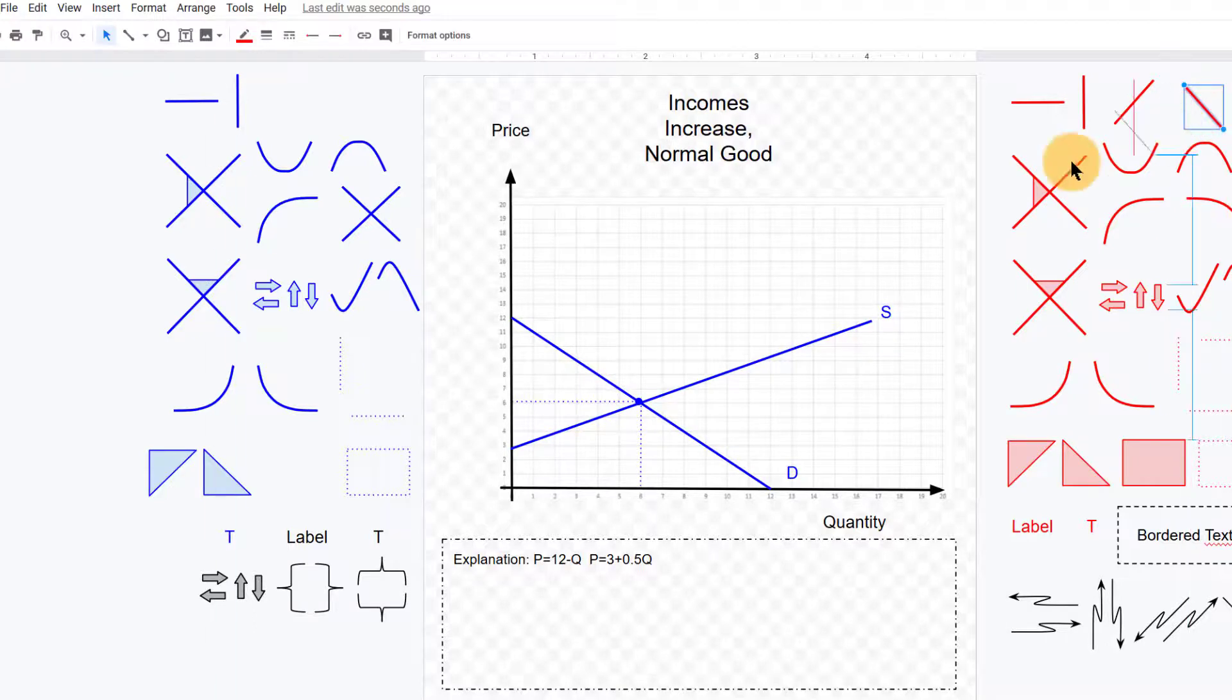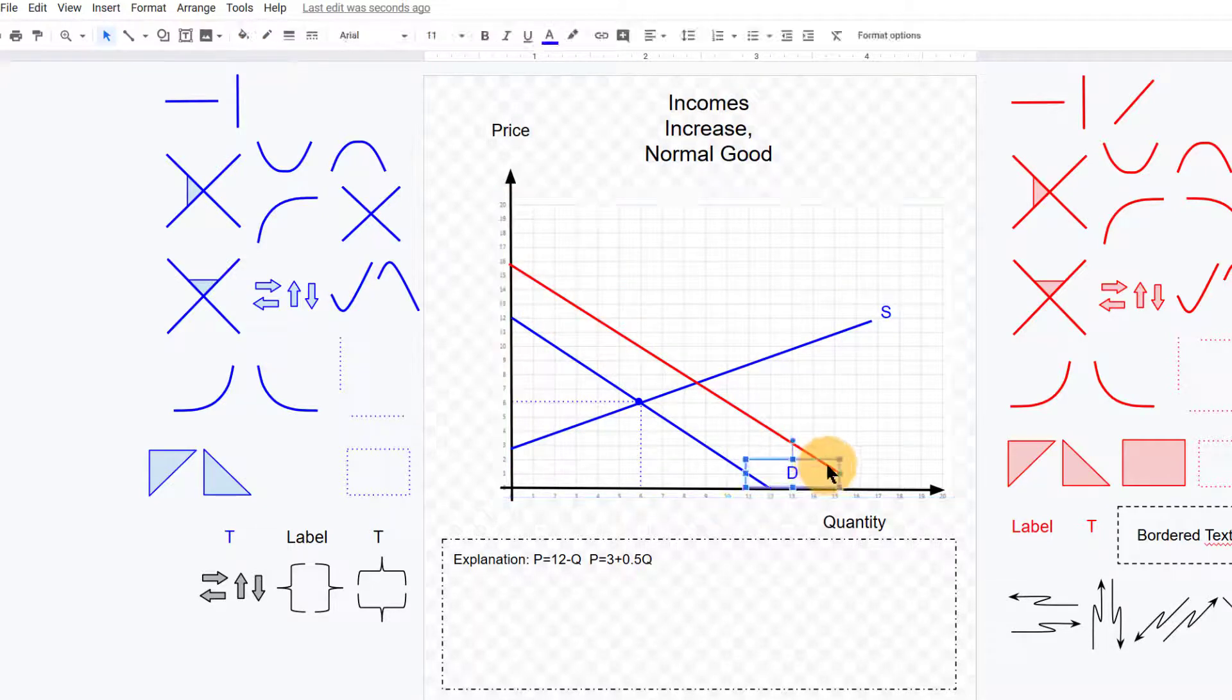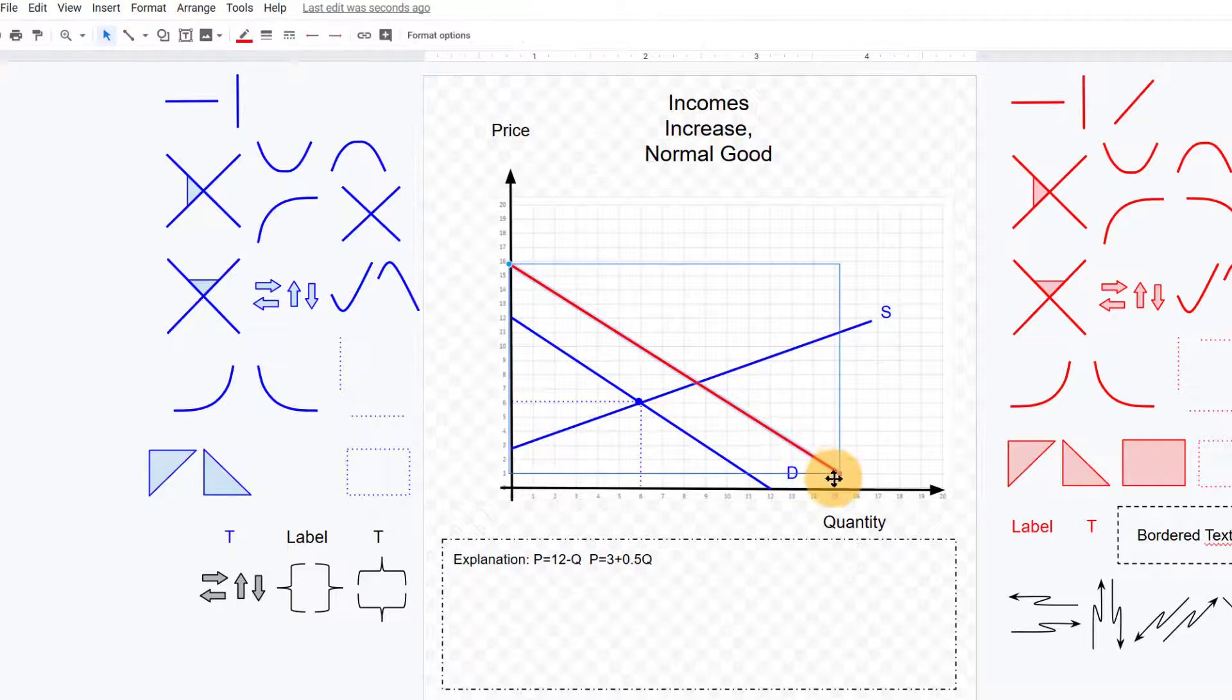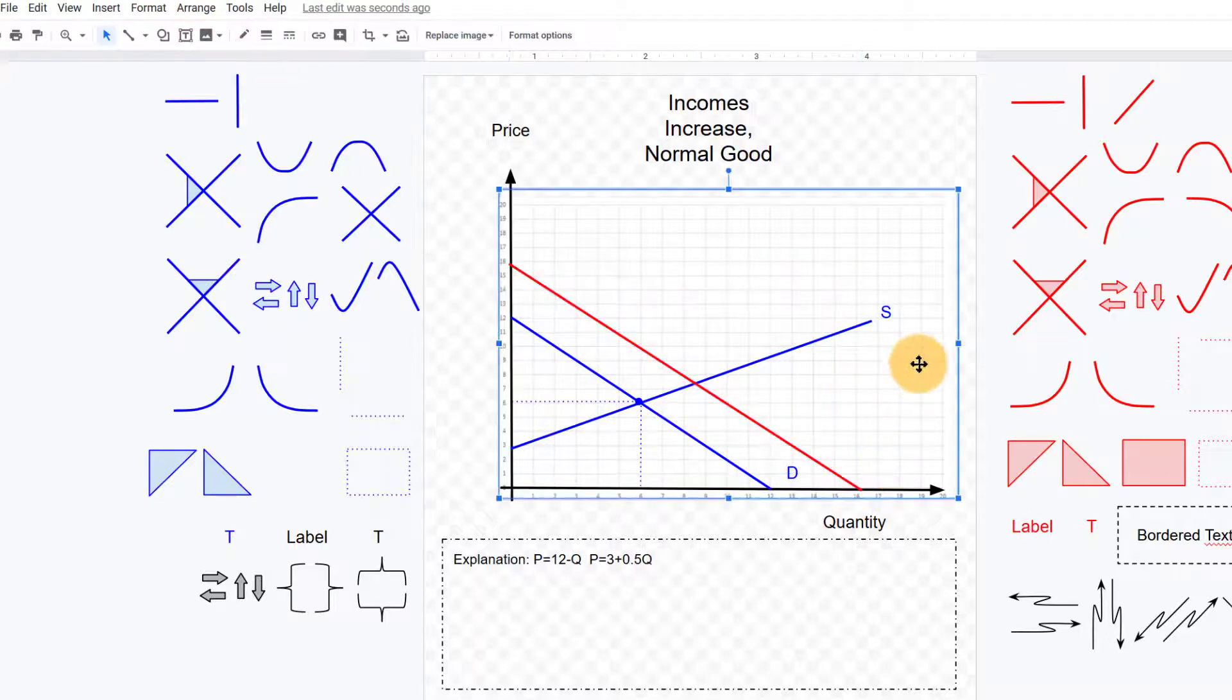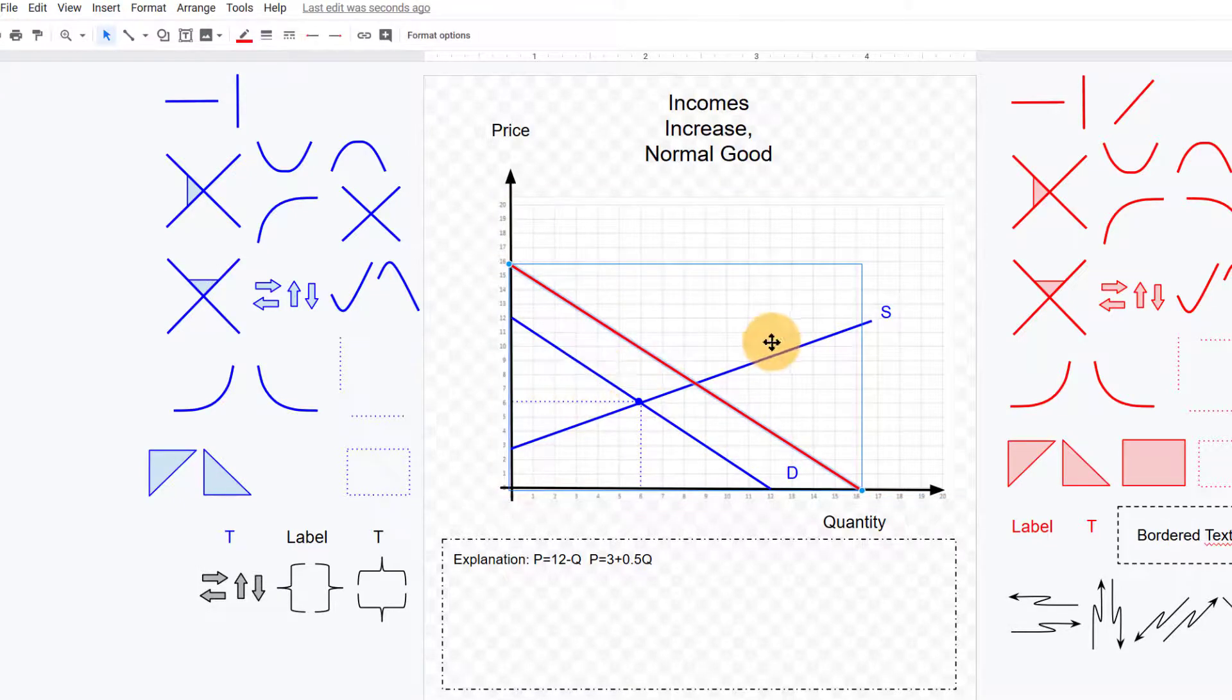Then we'd want to show an increase in demand, so then we could maybe grab the red demand curve over here to show an increase in demand. An increase in demand is a shift to the right towards higher quantities. And maybe we're not given exactly what the new equation is going to be, we just want to show in general an increase in demand. Then we can just draw a line anywhere to the right for an increase in demand.